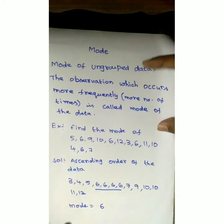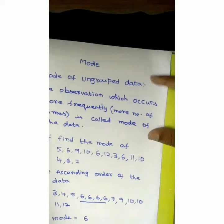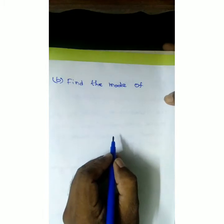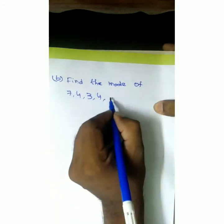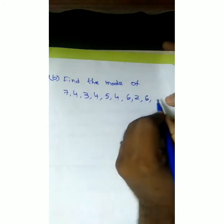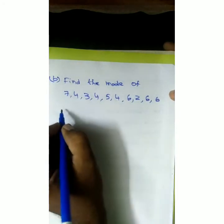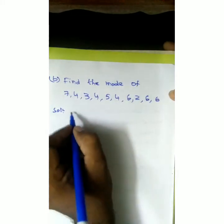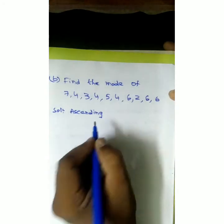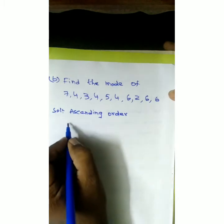In this way, we can find the mode of ungrouped data. Let us see one more example. Suppose a question is given: find the mode of 7, 4, 3, 4, 5, 4, 6, 2, 6, 6. So if you write ascending order, you can easily identify which observation is repeated more number of times, or you can write directly also.